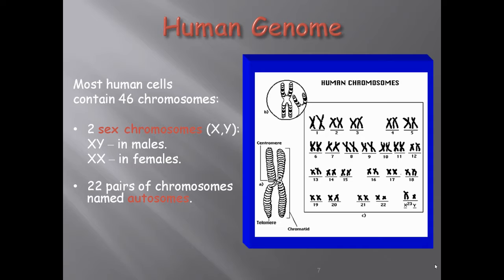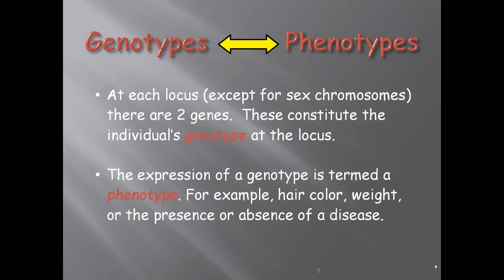Human cells mostly contain 46 chromosomes. If there are more or fewer chromosomes, many diseases or congenital conditions can occur. Of these 46 chromosomes, there are two sex chromosomes: XY in males and XX in females. There are 22 pairs of autosomes, which are the same in males and females, and one pair of sex chromosomes, which differs between males and females.